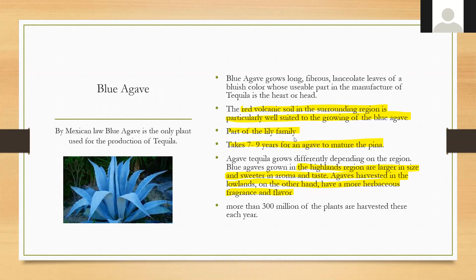Agave tequilana grows differently depending on the region — it's very much a terroir concept in spirits. Blue agave grown in the highlands is typically larger and sweeter in aroma and taste, while agave harvested in the lowlands tends to be more herbaceous and fragrant. More than 300 million of these plants are harvested each year, which is putting a real strain on supply and demand for blue agave spirits.